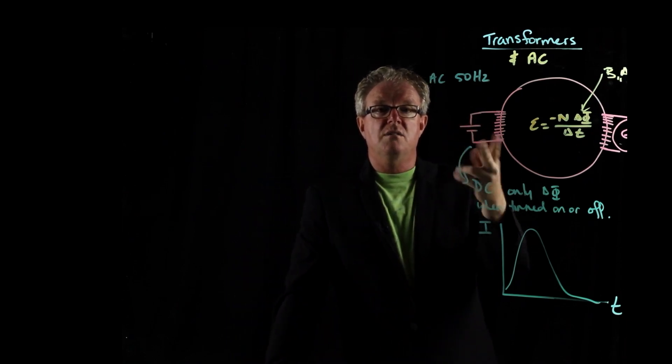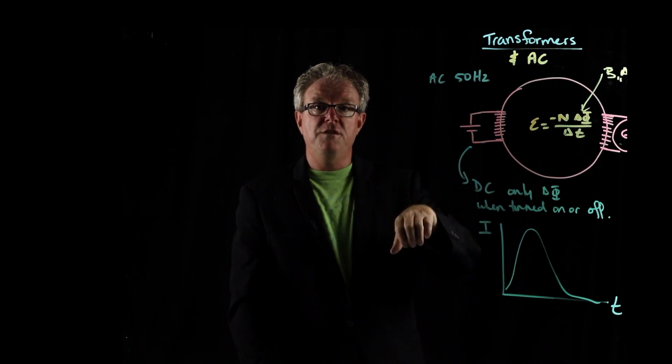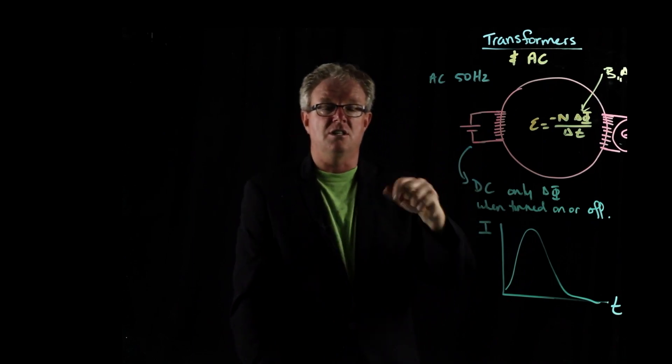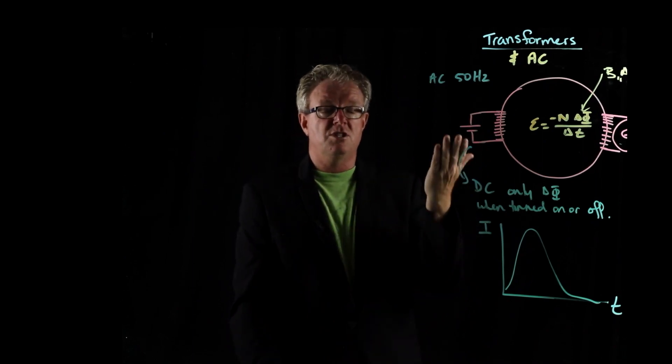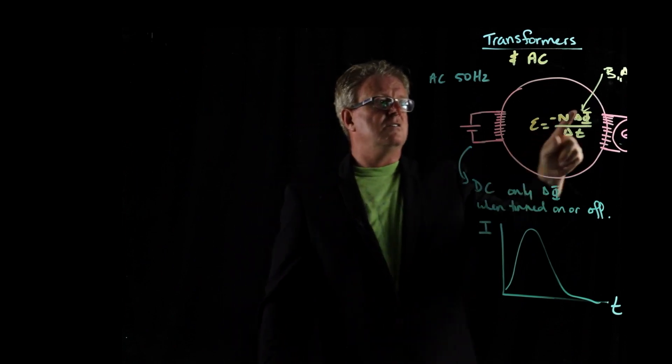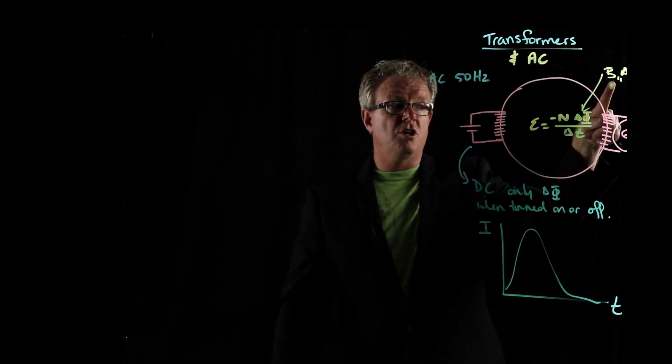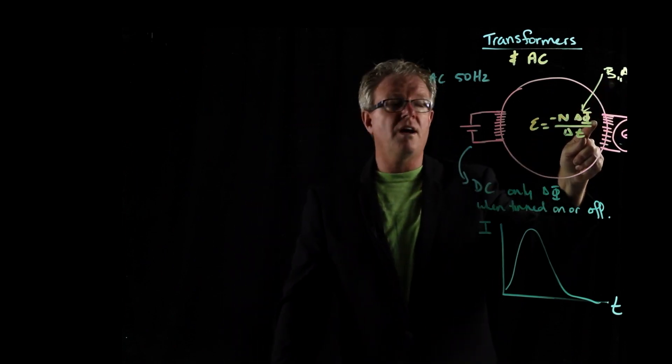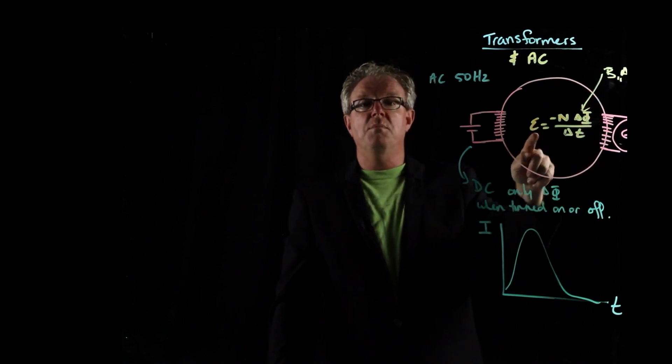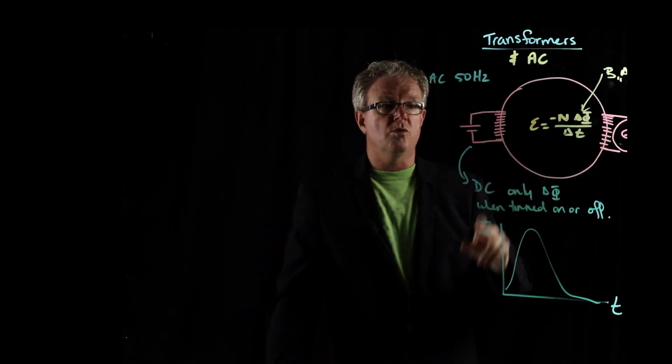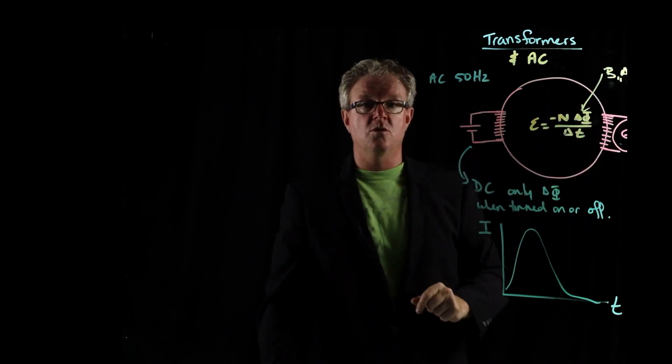Because the current is changing direction, it's inducing a magnetic field, and the magnetic field is changing 50 times a second. So since we've got a changing magnetic field 50 times a second, that's going to create a change in flux, which means we're constantly going to be generating an EMF in the second coil, in the first coil, and then, of course, in the second coil.